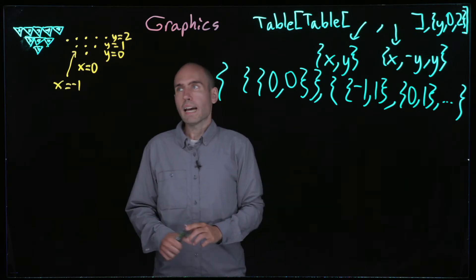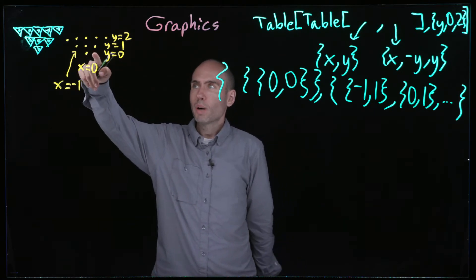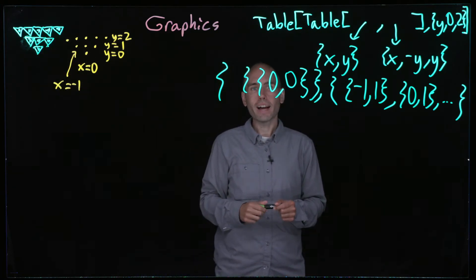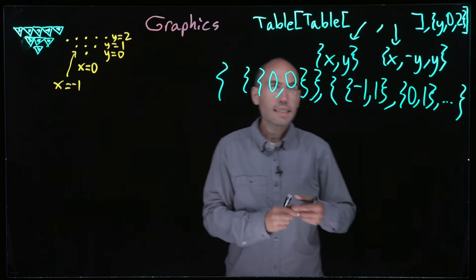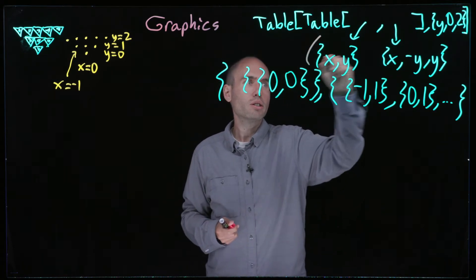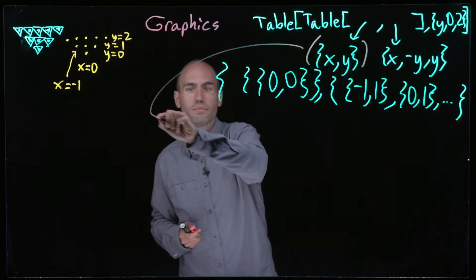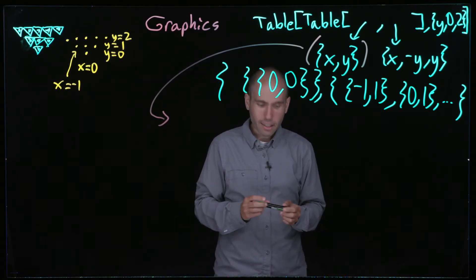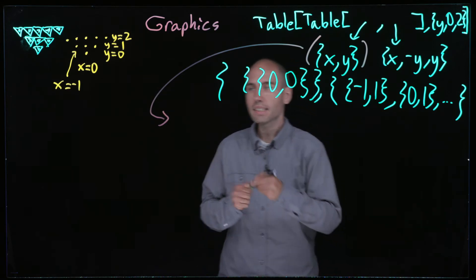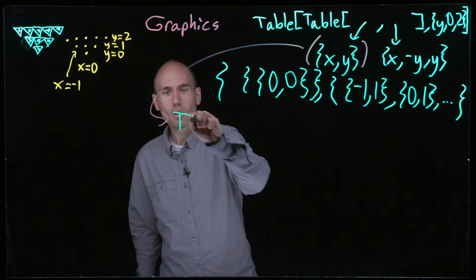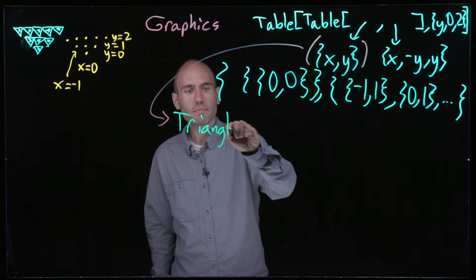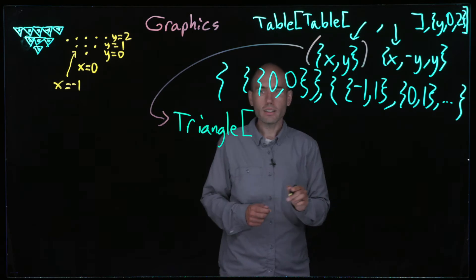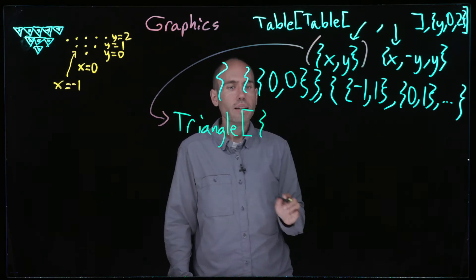So what have I done? I haven't done that much, but what I've done is I found the bottom vertex of each of these nine triangles. Next, let's replace this with something that actually produces a triangle.